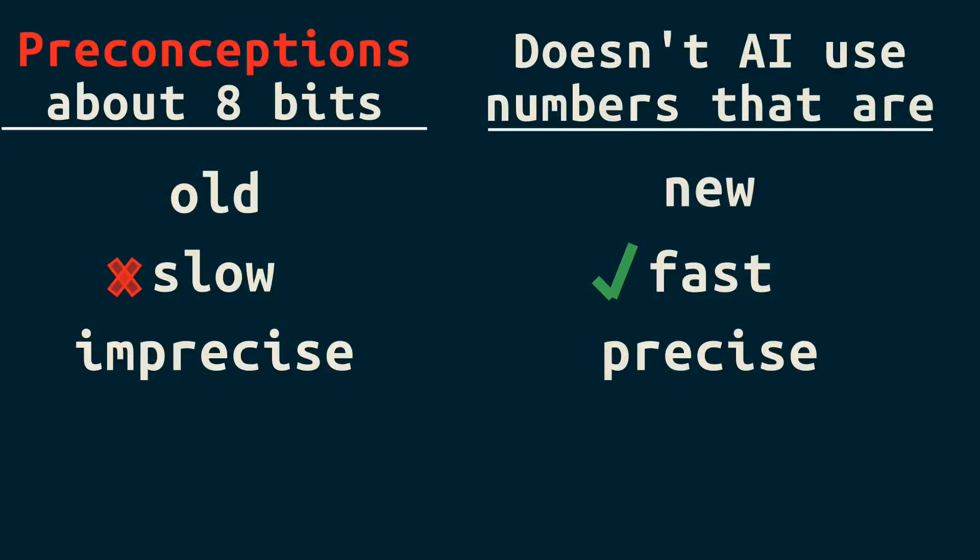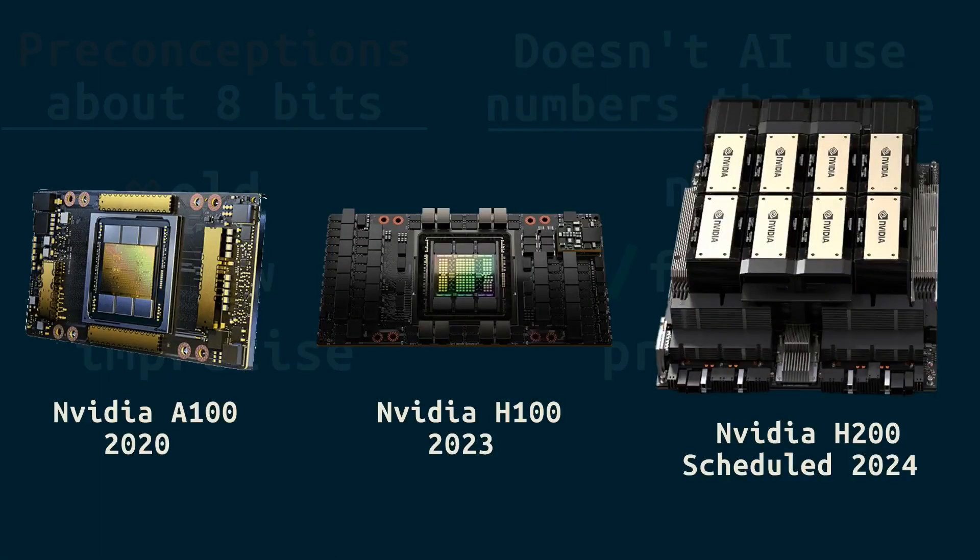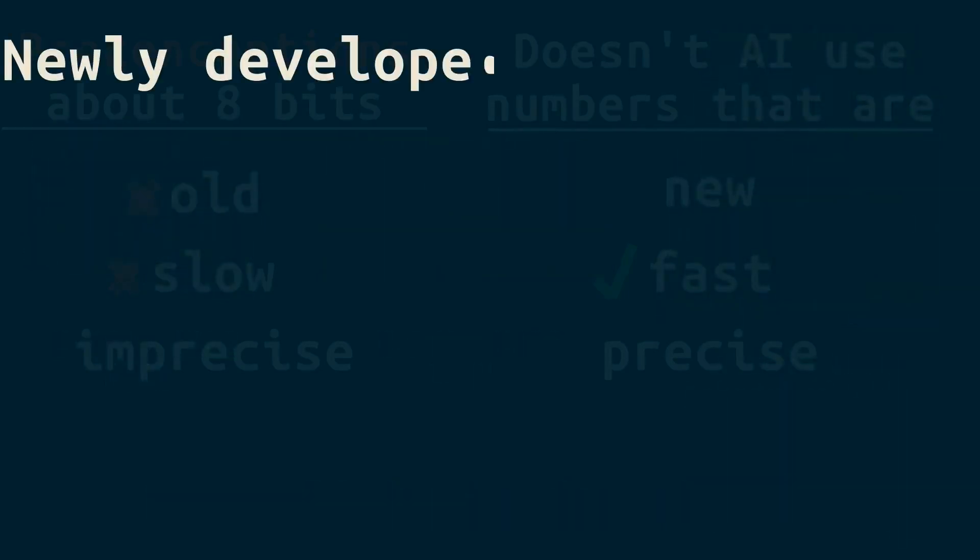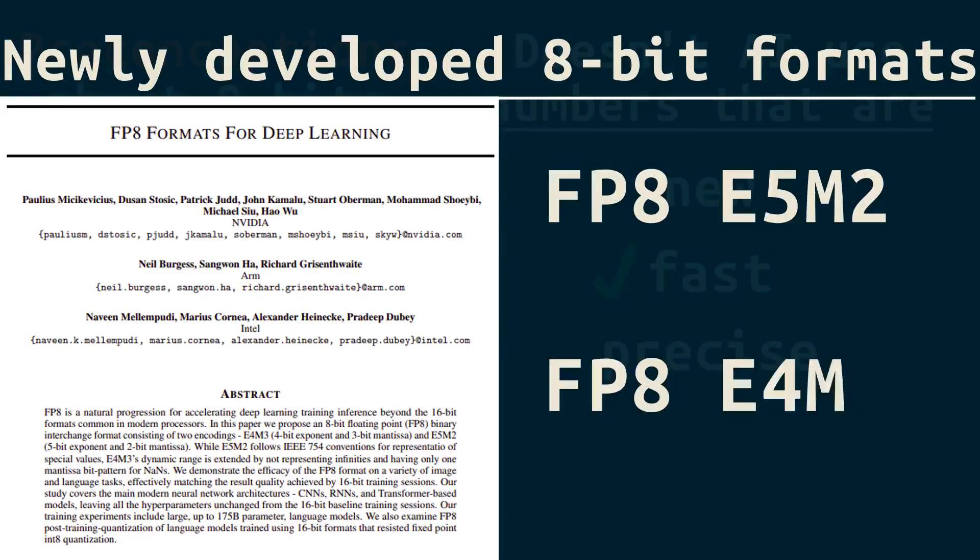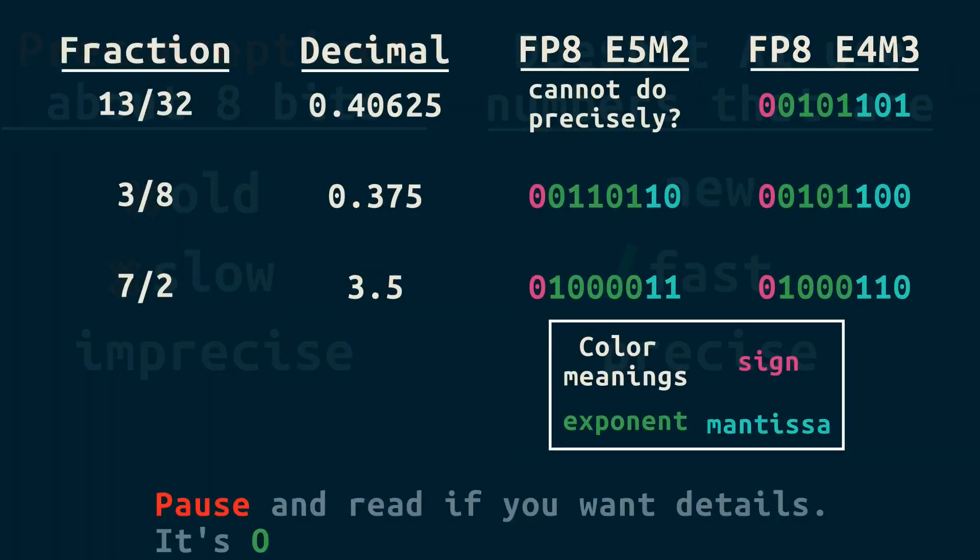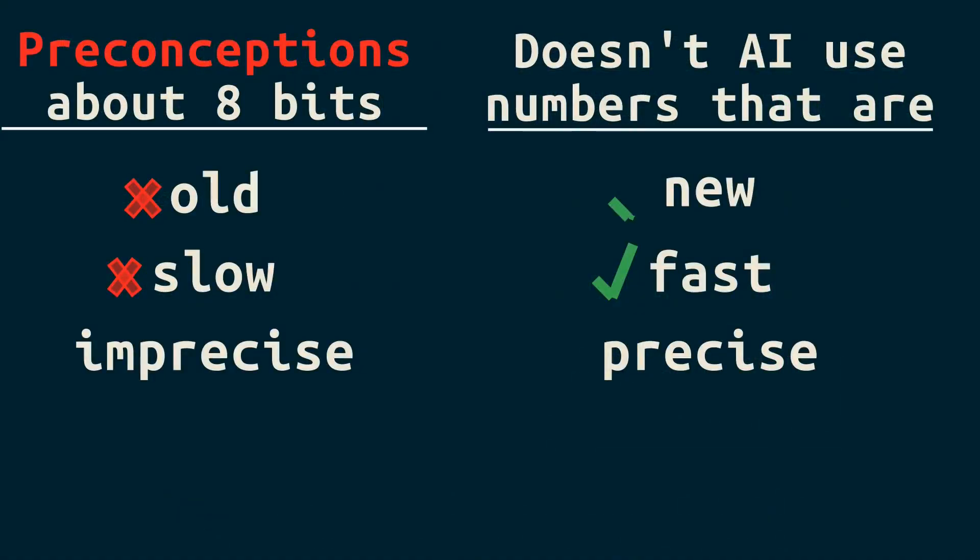It's also not accurate to say 8-bit numbers are old. The AI hardware running these 8-bit calculations certainly isn't old. And researchers are constantly finding new, better ways to use 8-bit integers. There are also developments like this 2022 paper from NVIDIA, ARM, and Intel, that proposes two new 8-bit formats for floating point numbers. Here's a quick example of what these look like. So 8-bit numbers are still developing in new ways.